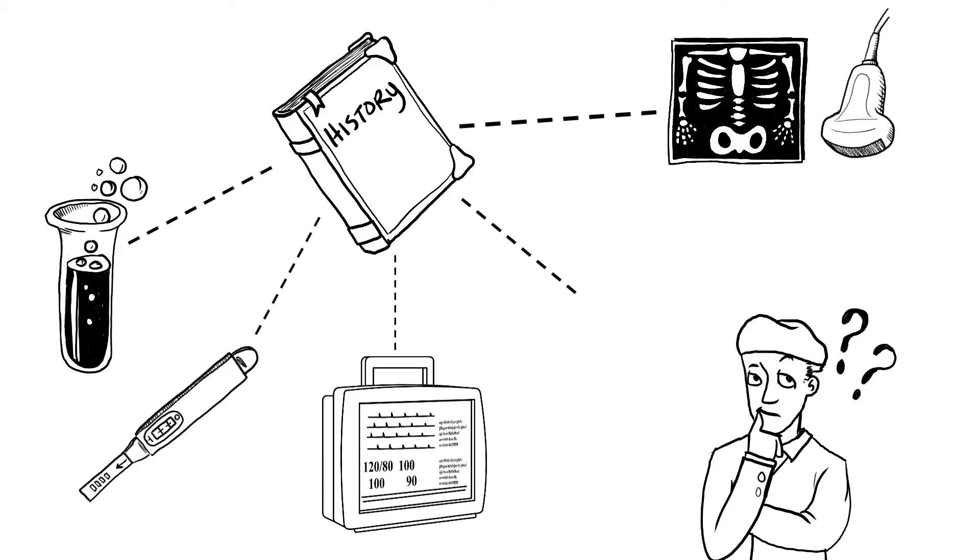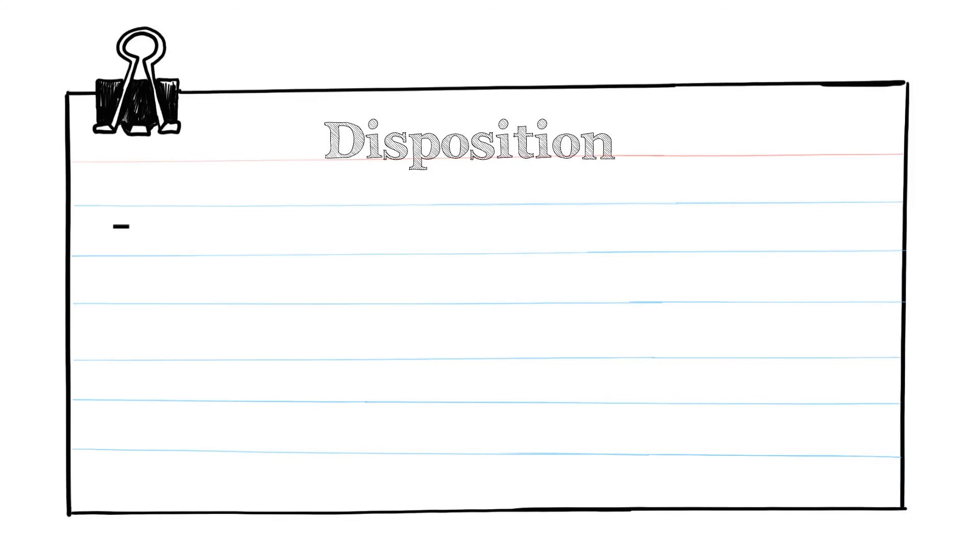Your management is directed by the results of that history, physical, and initial examination. For some patients it's 'I don't know,' for some it's 'I really think they've got a PE and I'm going to have to start working them up down that algorithm,' or 'I think they're having an MI.'